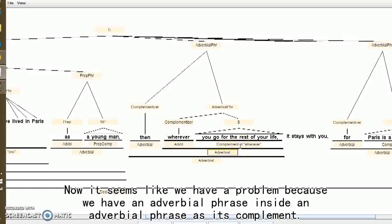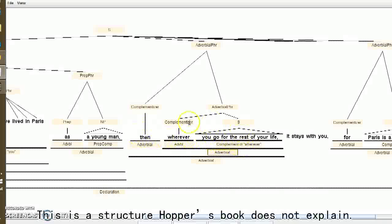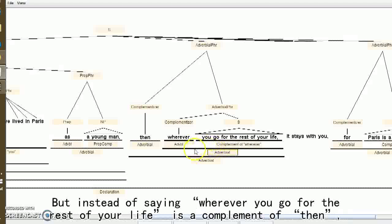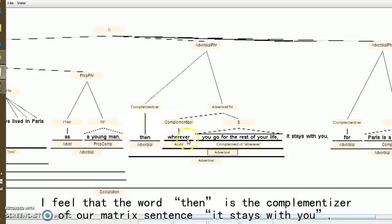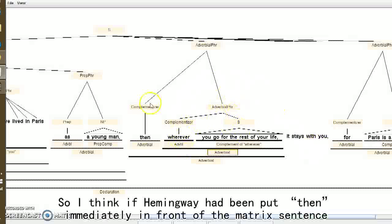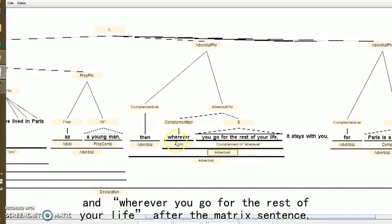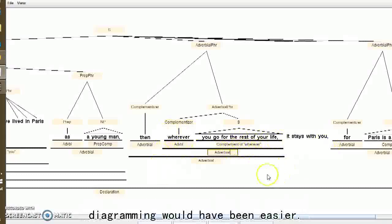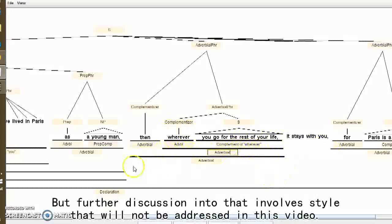Now it seems like we have a problem because we have an adverbial phrase inside an adverbial phrase as its complement. This is a structure Hopper's book does not explain. But instead of saying wherever you go for the rest of your life is a complement of then, I feel that the word then is the complementizer of a matrix sentence, it stays with you, and together they are the result. So I think if Hemingway had put then immediately in front of the matrix sentence and wherever you go for the rest of your life after the matrix sentence, diagramming would have been easier. But further discussion into this involves style that will not be addressed in this video.